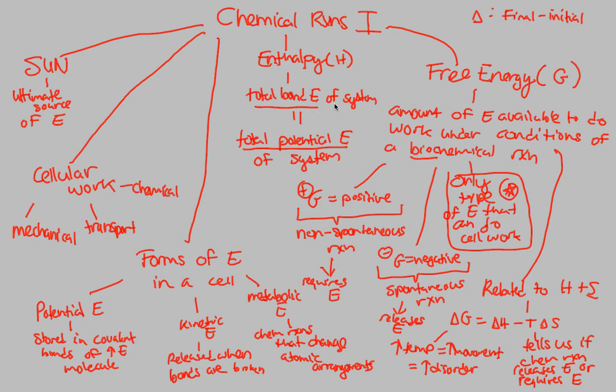So overall, now we have a better understanding of what chemical reactions are in the scope of metabolism. We understand that the sun is our ultimate source of energy, of course, and it's the starting point of energy. Cellular work is defined as things that are mechanical or transport or chemical within the cell. We're going to really focus on the chemical side of things. And we talked about the forms of energy in the cell, but the one we want to definitely focus on is this metabolic energy, chemical reactions that change atomic arrangements. That's what metabolism is all about.